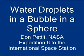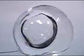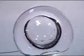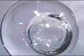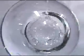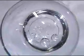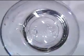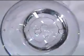Water droplets in a bubble in a sphere. Here we have a sphere of water 75 millimeters in diameter with an air bubble inside about 35 millimeters in diameter and we inject water droplets anywhere from one to eight millimeters in diameter into the bubble and look at the resulting collision dynamics where they collide with each other and the walls.